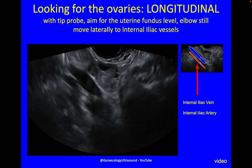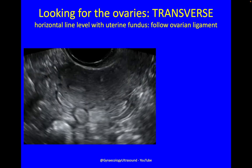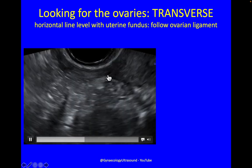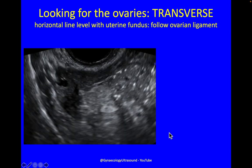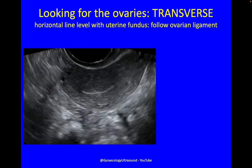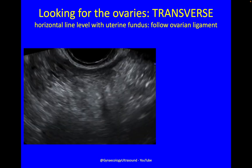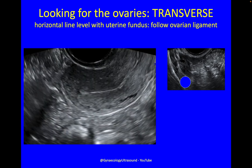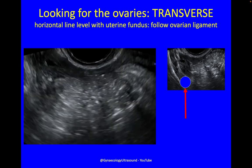These internal iliac vessels tend to be relatively easy to find. If you can't find the ovaries that way, go transversely at the uterine fundus level and follow out laterally the ovarian ligament. Rotate your probe at the level of the fundus, angle up past the interstitial portion of the tube to the ovarian ligament — it looks like a tube but it's a ligament. Follow that out laterally until there's the ovary at the end of the ligament. It can be slightly harder because your landmarks are different, but knowing both techniques means if you can't find the ovary one way, you've got another.